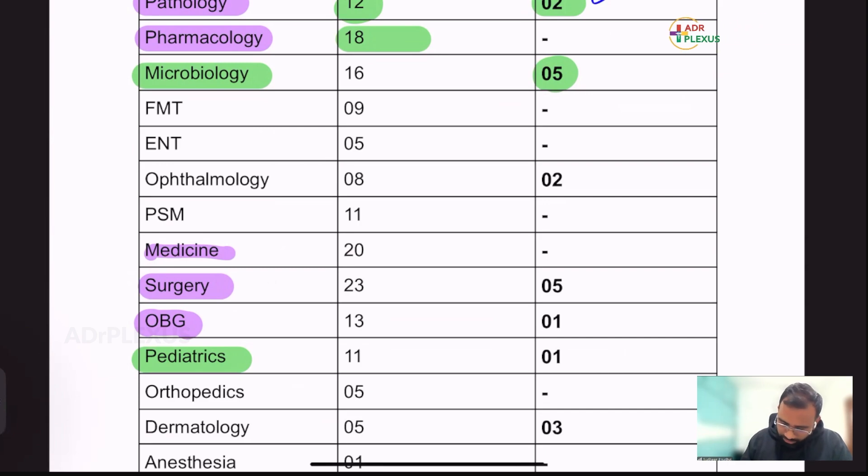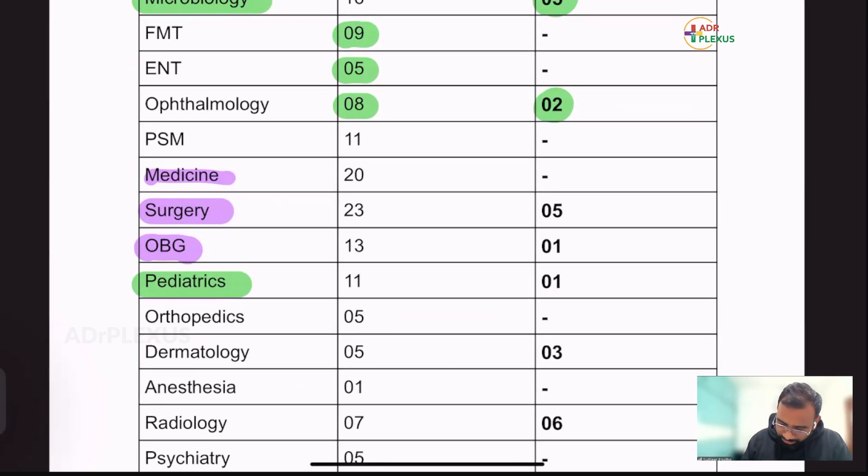And then coming to FMT, nine questions like no image-based things. Again, ENT, five questions and ophthalmology, as usual for the past two years, they are giving more questions in ophthalmology, including eight, total eight questions, including two image-based questions from ophthalmology. And PSM, as usual, we know there is like 11 questions from PSM. It always dominates in both NEET as well as INICT.